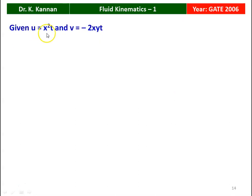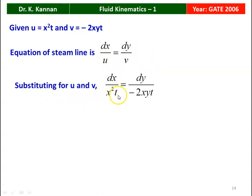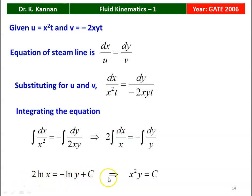Given u = x²t and v = -2xyt. The equation for stream line is dx/u = dy/v. Substituting: dx/(x²t) = dy/(-2xyt). Integrating — t cancels on both sides. We get: integral dx/x² = -integral dy/(2xy). One x cancels, giving 2·integral dx/x = -integral dy/y, so 2 ln x = -ln y + constant C. Rearranging: x²y = C. That is the equation for the stream line — x²y = constant.